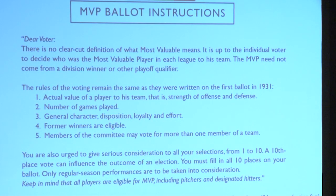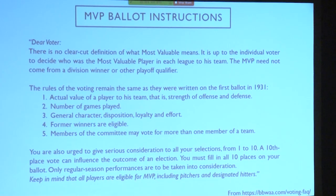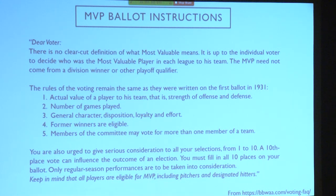So there's a big question: what determines value? We could devote the rest of this conference to discussing what criteria should be used when looking at MVPs. But here's the entirety of the instructions the Baseball Writers Association of America gives to voters: they tell people to look at value, strength of offense and defense, number of games, and there's sort of a congeniality component for general character and disposition. How do you compare a pitcher to a designated hitter? It's really complicated. They also point out how important each vote is — a tenth place vote can sway the election, and indeed that is true based on past awards.